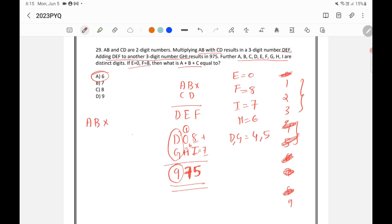So here now we got, we know that AB into CD is DEF. Now we know that E and F are 0 and 8.